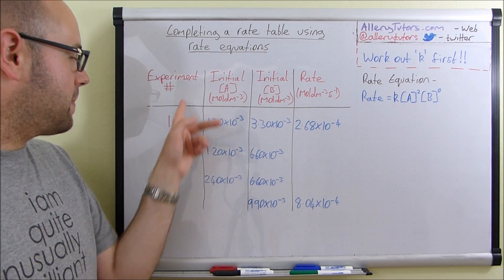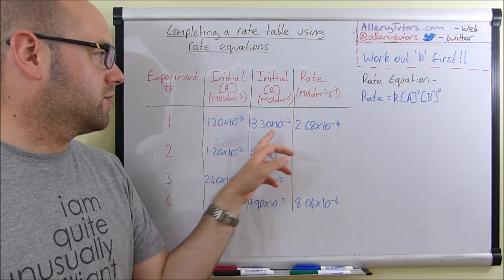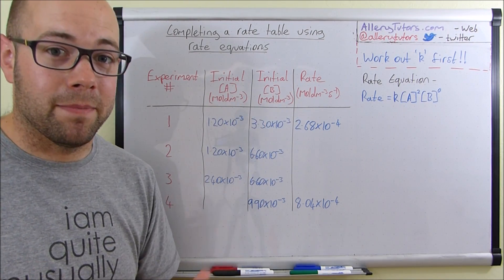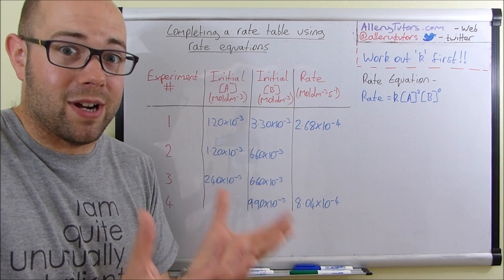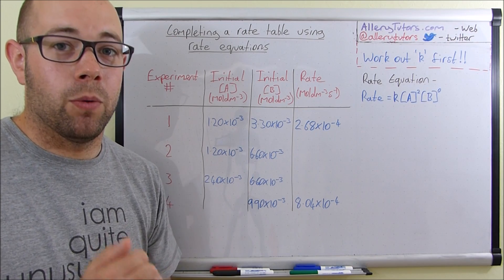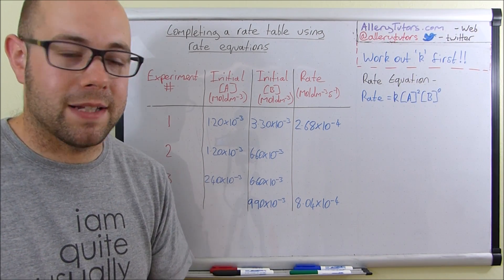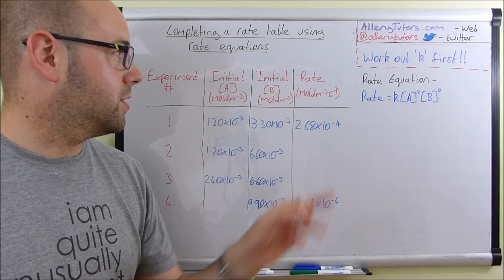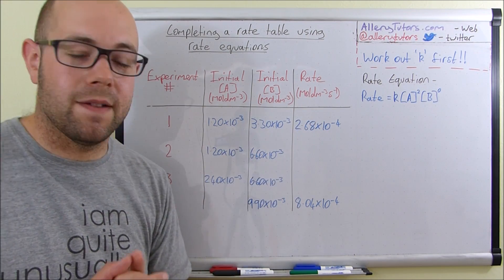Let me talk you through the table. We've got four different experiments where we've altered the concentration of A and the concentration of B — these could be any reagents but we'll just call them A and B. The initial concentrations are measured in mol per dm³. We mix A and B together and monitor the rate of reaction, which could be a colour change or the amount of gas produced per minute. For experiment one, with A and B in these concentrations, we get a rate of 2.68 × 10⁻⁴.